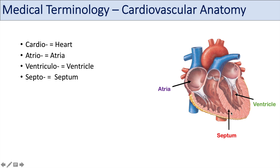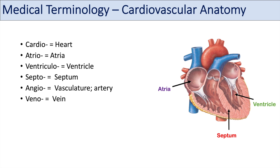With atrio you can think of atrial or atrial appendage. With ventriculo you can think of ventricular, or premature ventricular contraction. With septo you can think of septal. Another term you may hear often is angio — you can think of angioplasty. Angio means vasculature or artery. Another prefix is veno, meaning vein — you can think of veno-occlusion or venous thromboembolism.